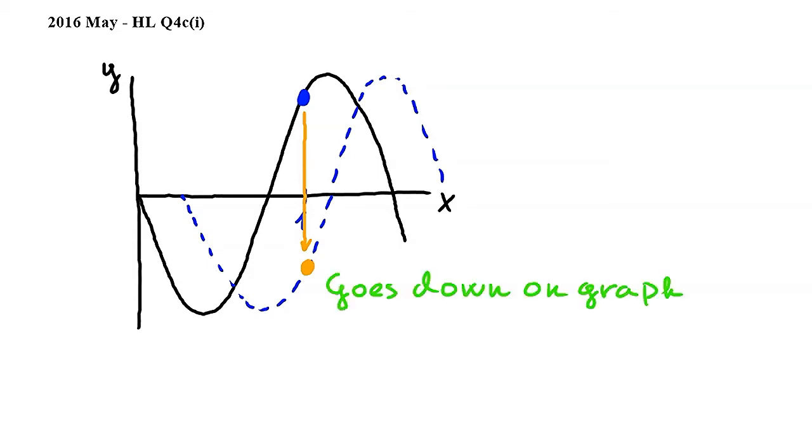Since the downwards or negative direction on the graph represents movement to the left in reality, we can conclude that our particle moves to the left.